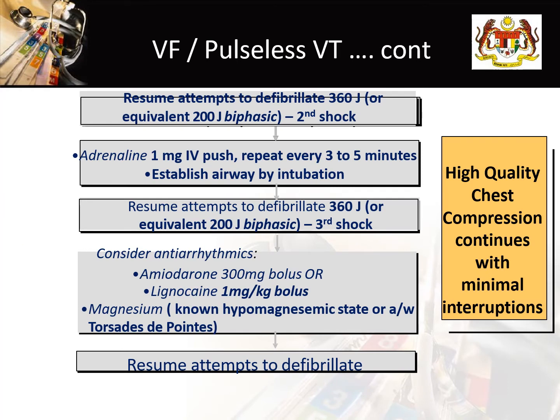After the first shock, immediately resume high-quality chest compression with minimal interruption. Within these two minutes, emphasize high-quality chest compression: push hard and fast at a rate of 100 to 120 with a depth of 5 to 6 cm. Allow full chest recoil, avoid hyperventilation, and the chest compression to ventilation ratio should be 30 compressions followed by 2 ventilations.